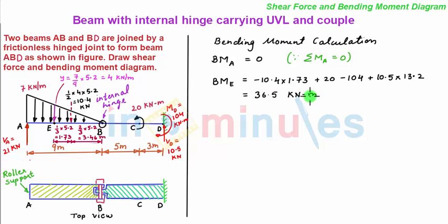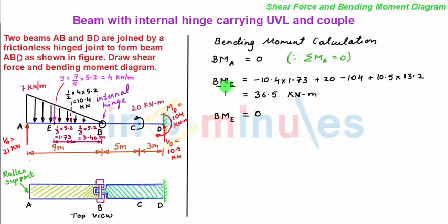Next we move towards point B. Since we already know that point E is a hinge, the bending moment at point E is 0. So we see that the bending moment at A and B is 0, and at point E the positive bending moment is maximum with a value of 36.5 kN·m.